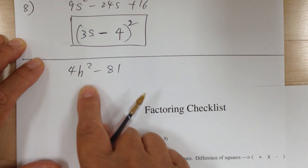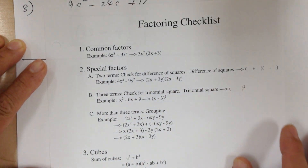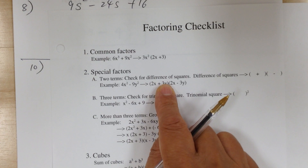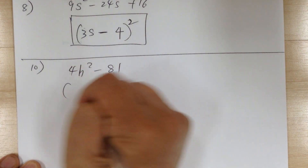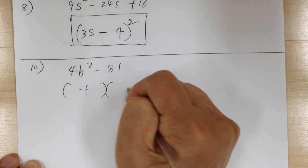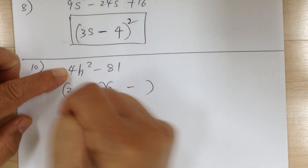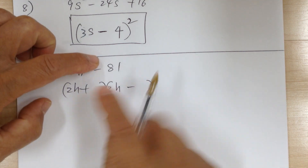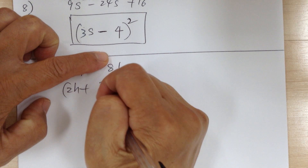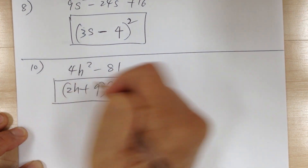Step 1, common factor — nothing to factor. Go to step 2: two terms, difference of squares, so do the conjugate. Get two sets of parentheses with plus and minus. To get 4, you need 2 × 2. H × H gives H². Plus times minus gives minus. 9 × 9 gives 81. So 4h² - 81 = (2h + 9)(2h - 9).